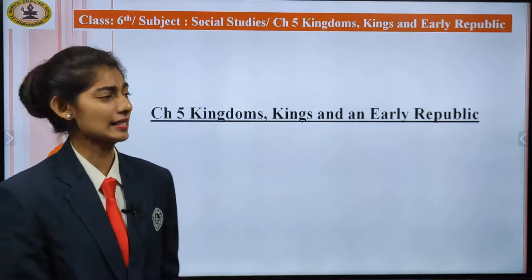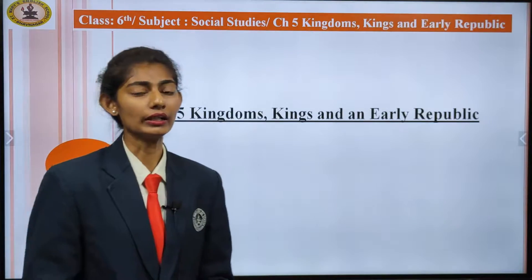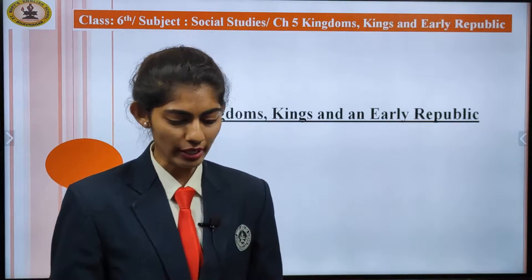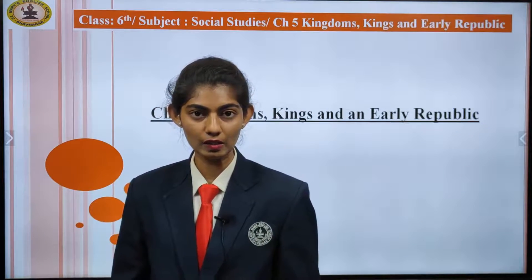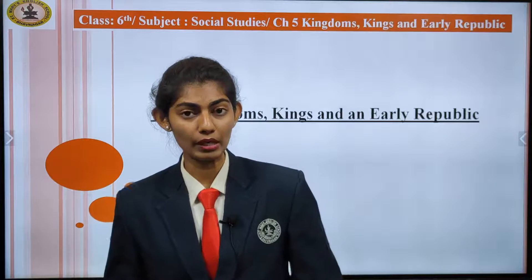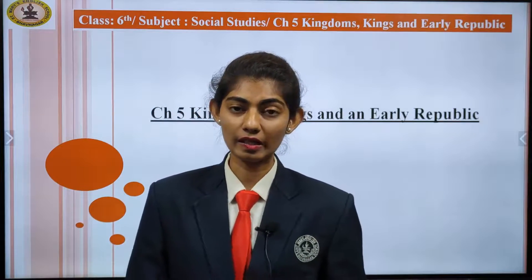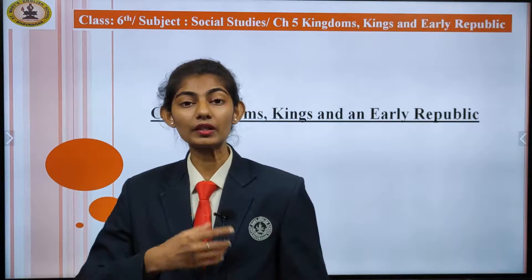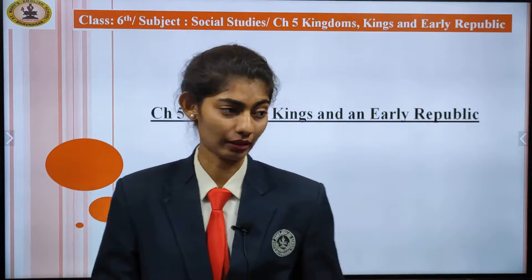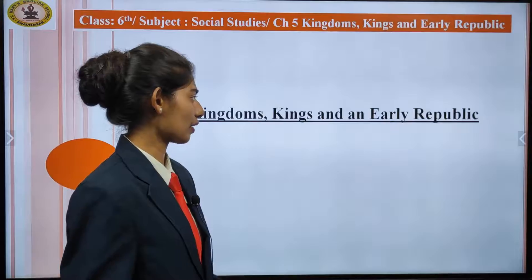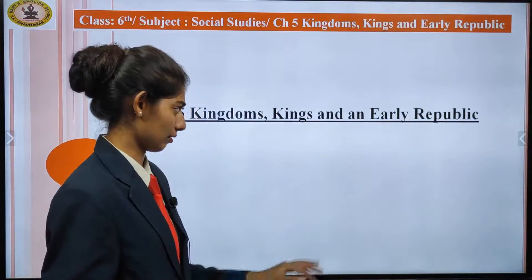Welcome back students with a new chapter — Chapter 5, that is Kingdoms, Kings and Early Republic. In this chapter we will be studying about how some men became rulers, we will study about Mahajanapadas, Vajji, and how people used to pay taxes to the kings. So let's start with the first topic.